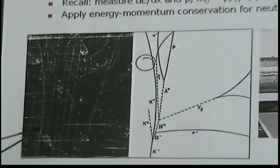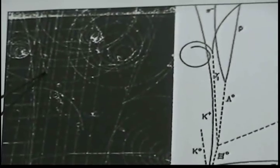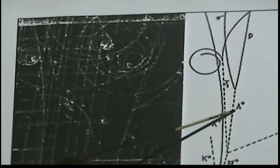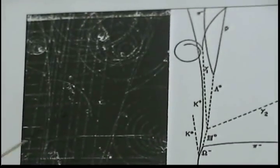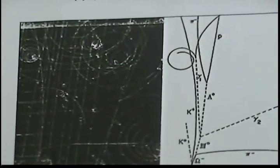So then you extrapolate this thing, and you see the little V here. That's where it interacts and it decays. And then by using energy momentum conservation, you can figure out that this was a lambda zero.